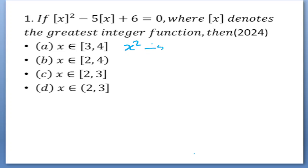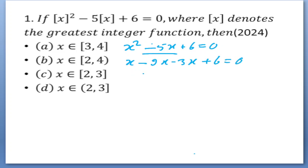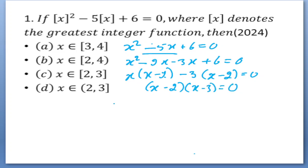To solve this, let us write the equation as a quadratic: x² minus 5x plus 6 equals 0. By splitting the middle term, we are actually finding the values of [x]. We get x(x minus 2) minus 3(x minus 2) equals 0, giving us (x minus 2)(x minus 3) equals 0. This gives x equal to 2 or 3. But since we are solving for [x], these are the values of the greatest integer function — [x] equals 2 or [x] equals 3.